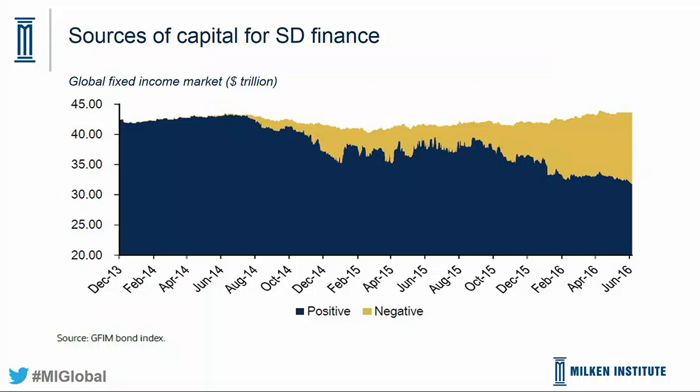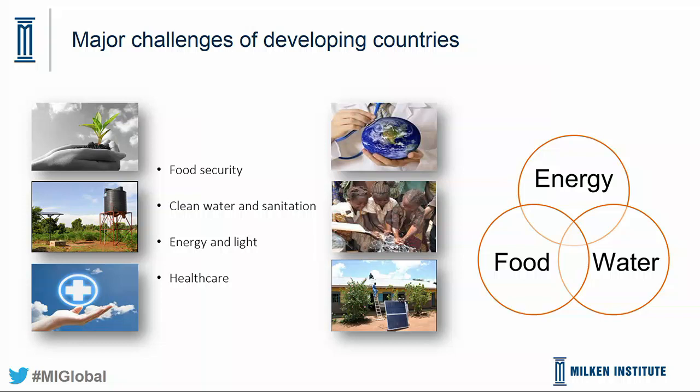The major challenges for developing countries are in food security, clean water and sanitation, energy, and healthcare — the food-water-energy nexus discussed throughout this conference. As we move toward nine billion people by 2050, we'll need to produce 60% growth in food production. Secretary Ross will tell us more about how to do that in a climate-smart way.